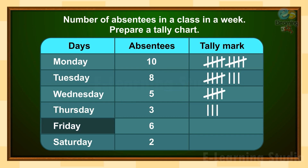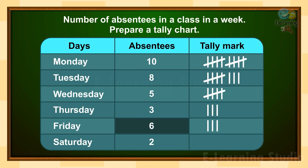The next day is Friday and the number is 6. For 6, first we make a group of 5 tally marks: 4 vertical lines and then 1 slanting line for 5. After that, 1 more vertical line for 6.